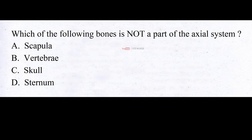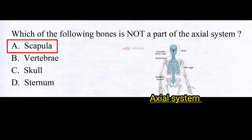Which of the following bones is not a part of the axial system? A. Scapula, B. Vertebrae, C. Skull, D. Sternum. And the correct answer is A. Scapula. Vertebrae, skull, and sternum are all parts of the axial system, whereas scapula is not a part of the axial system.